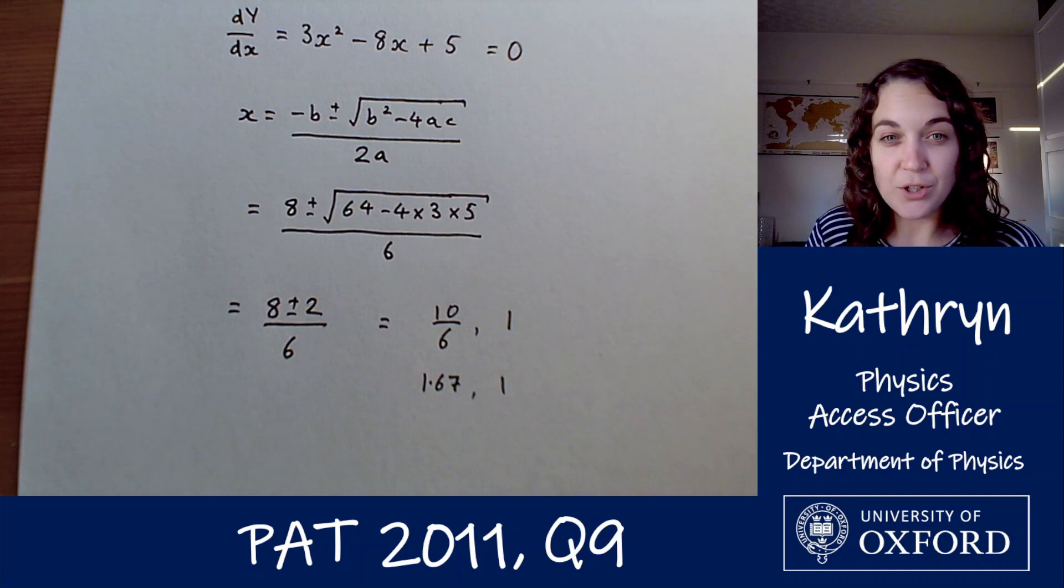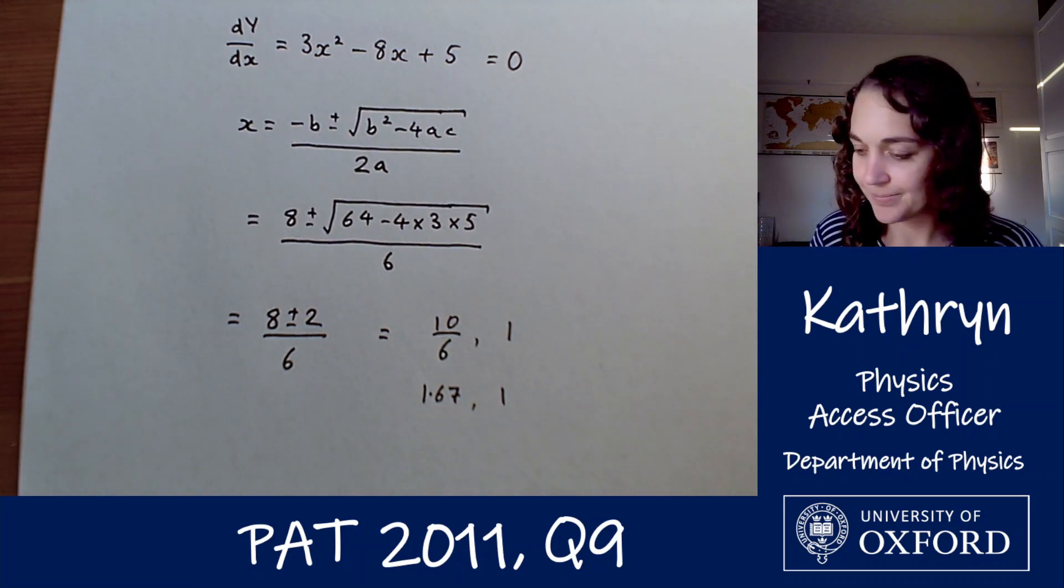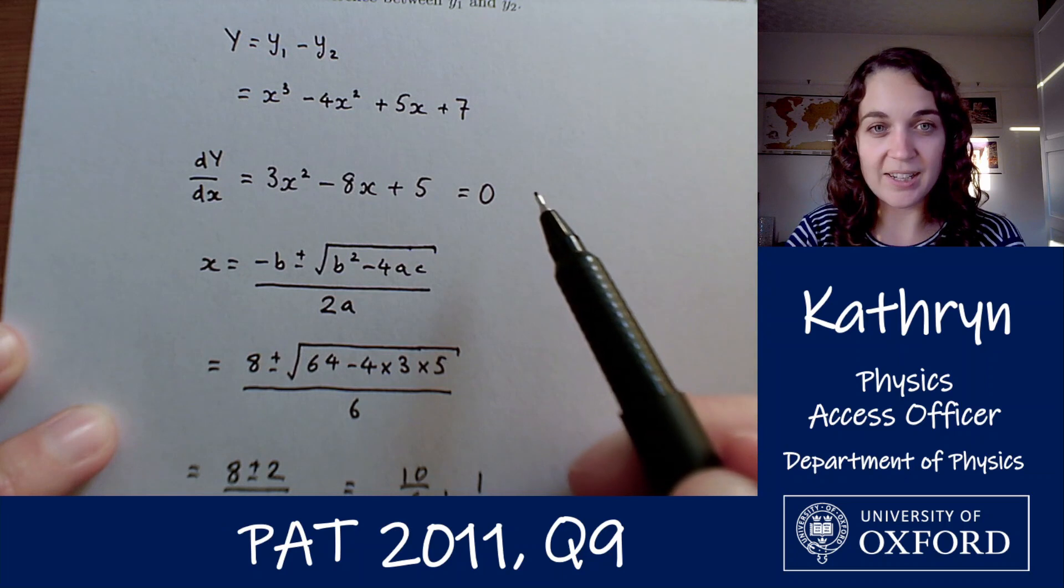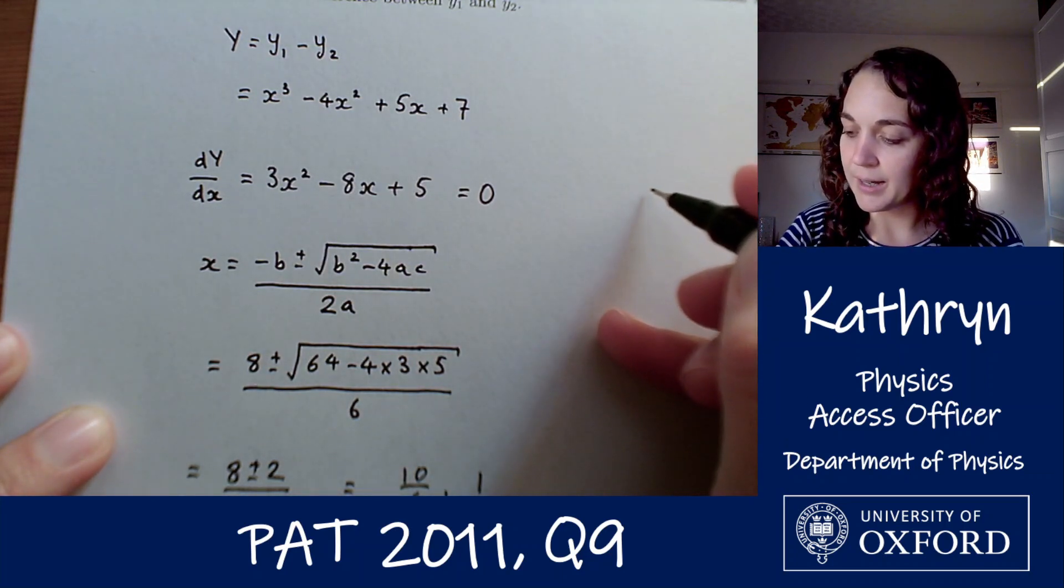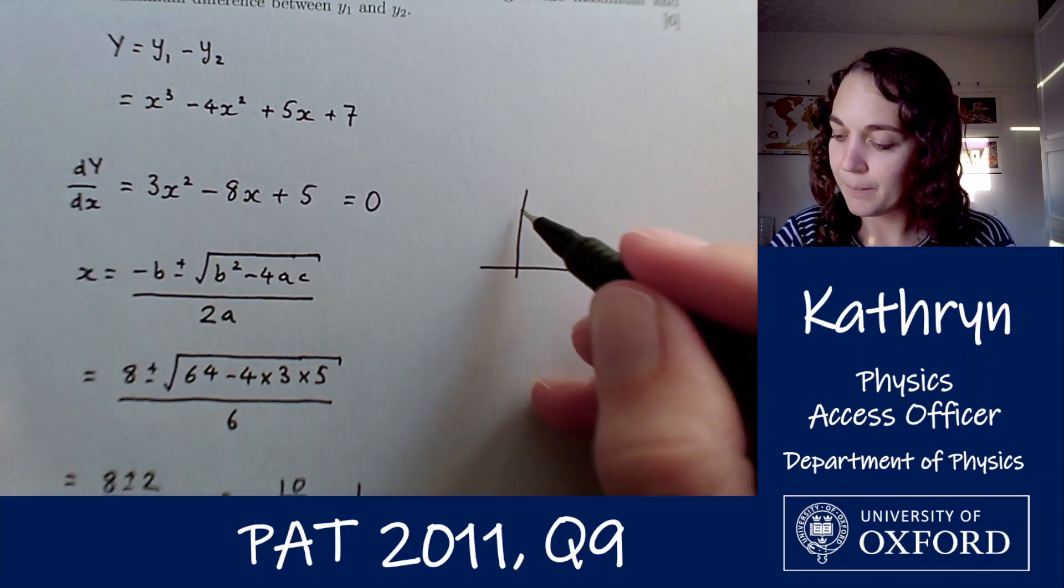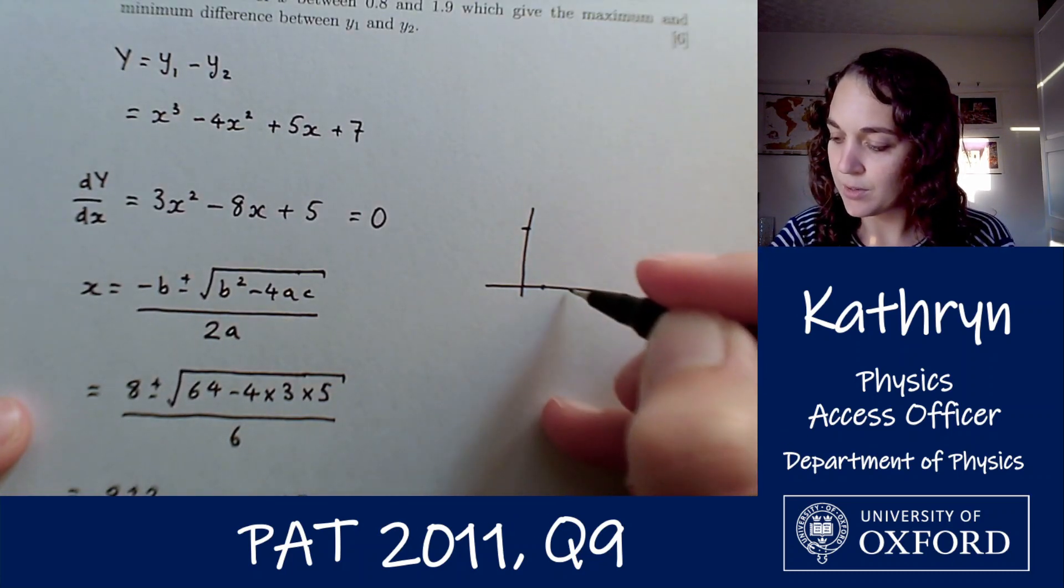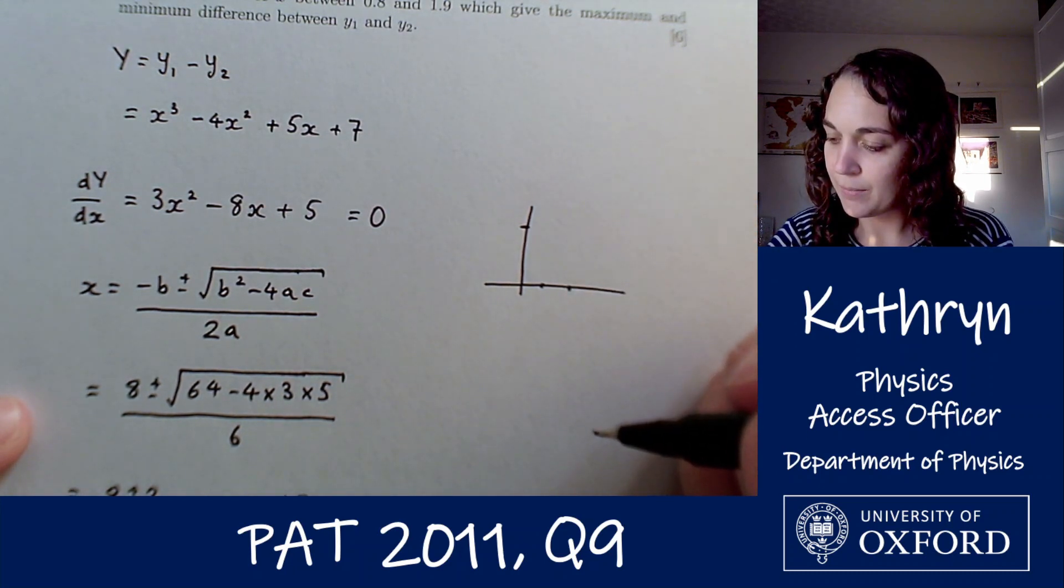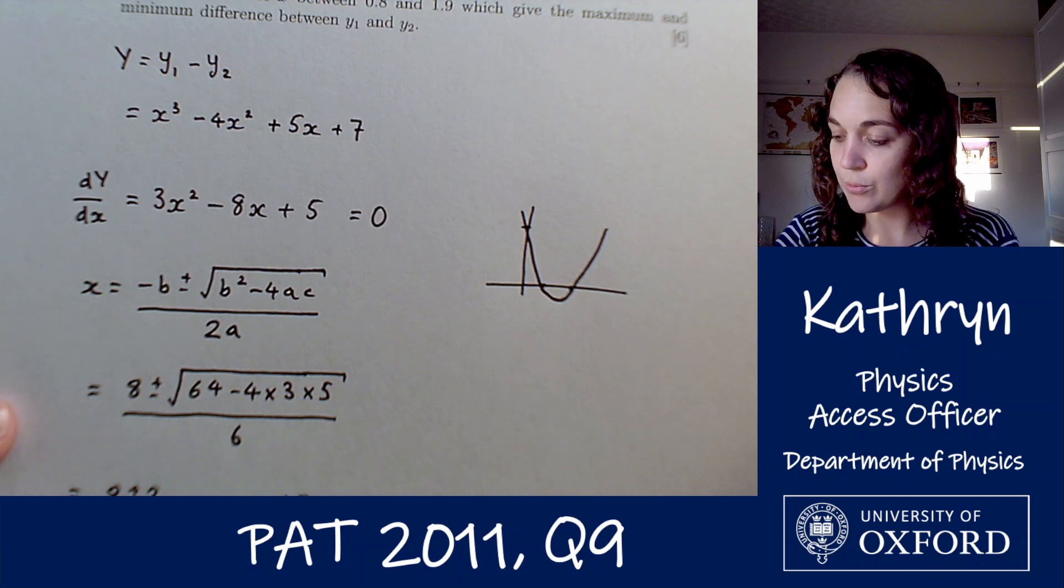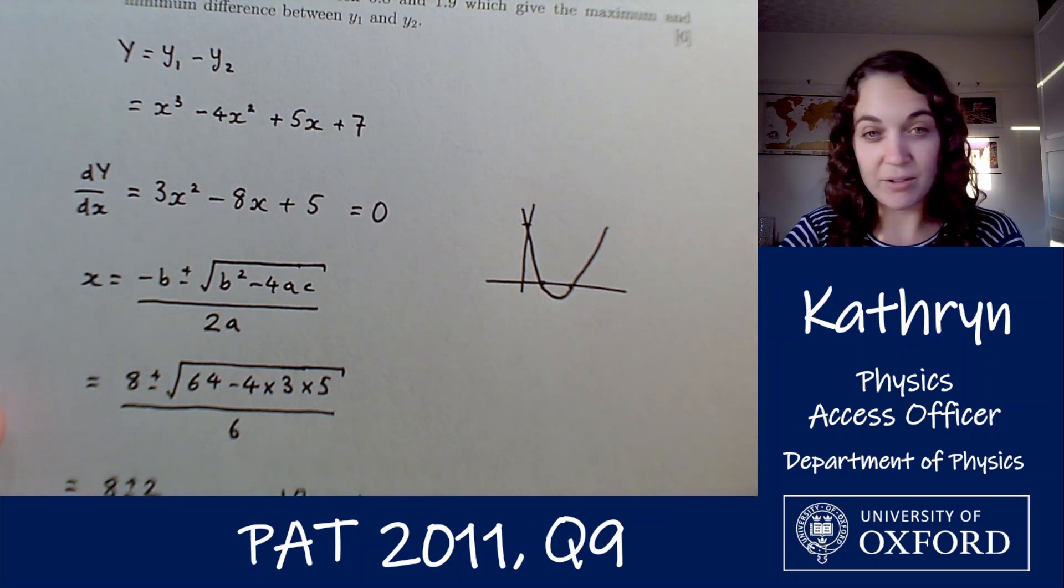So those are our two turning points, our maxima and or minima but at the moment we don't know which one is which. So we could have a think about the behavior of this quadratic and what those solutions mean. We could then look at the gradient at these two points and from the gradient at those two points think about whether it's going to be a maximum or a minimum.